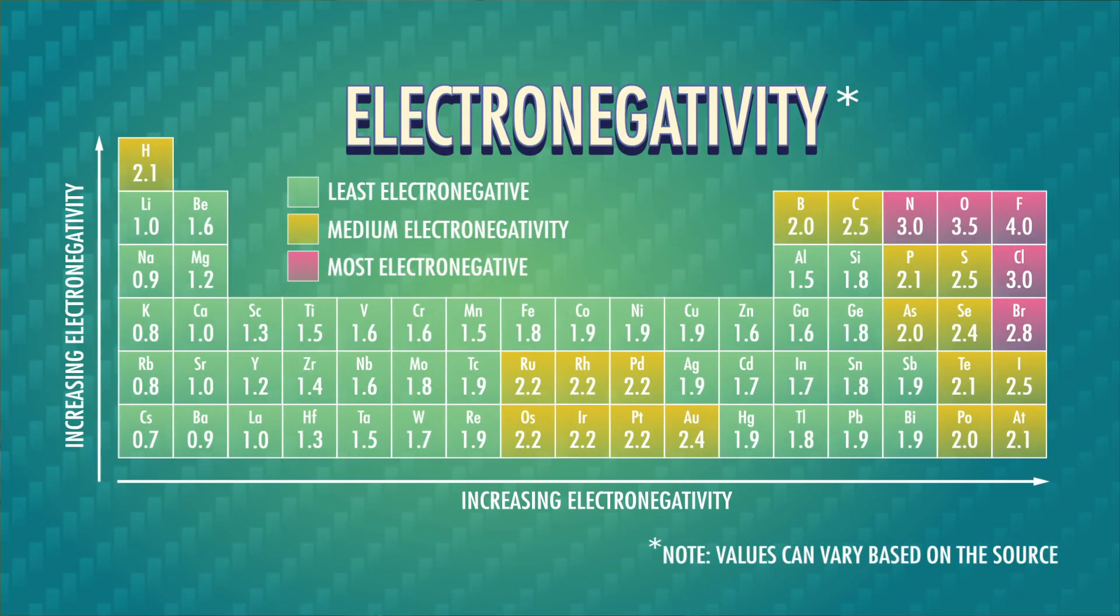That gets a little complicated, but thankfully, scientists of the past have done a lot of work for us. American chemist Linus Pauling developed a relative electronegativity scale, which ranks the elements from most electronegative, which is fluorine, to least.